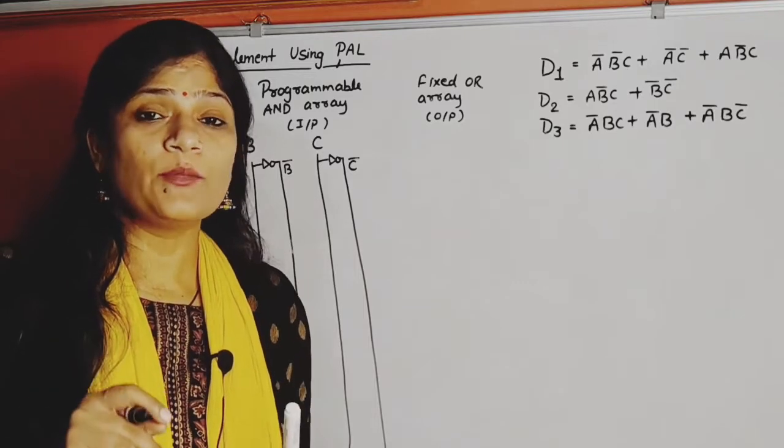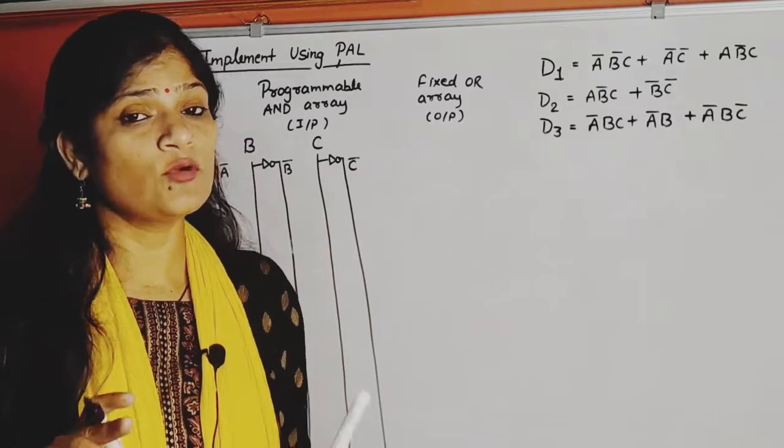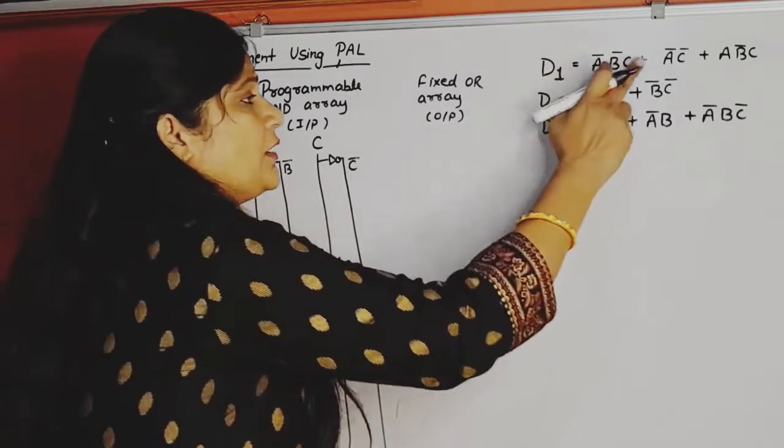The maximum number of product terms will determine how many AND gates we use for all. So in this case, one, two, three - three product terms means three AND gates for D1. One, two - two AND gates, but this is fixed.